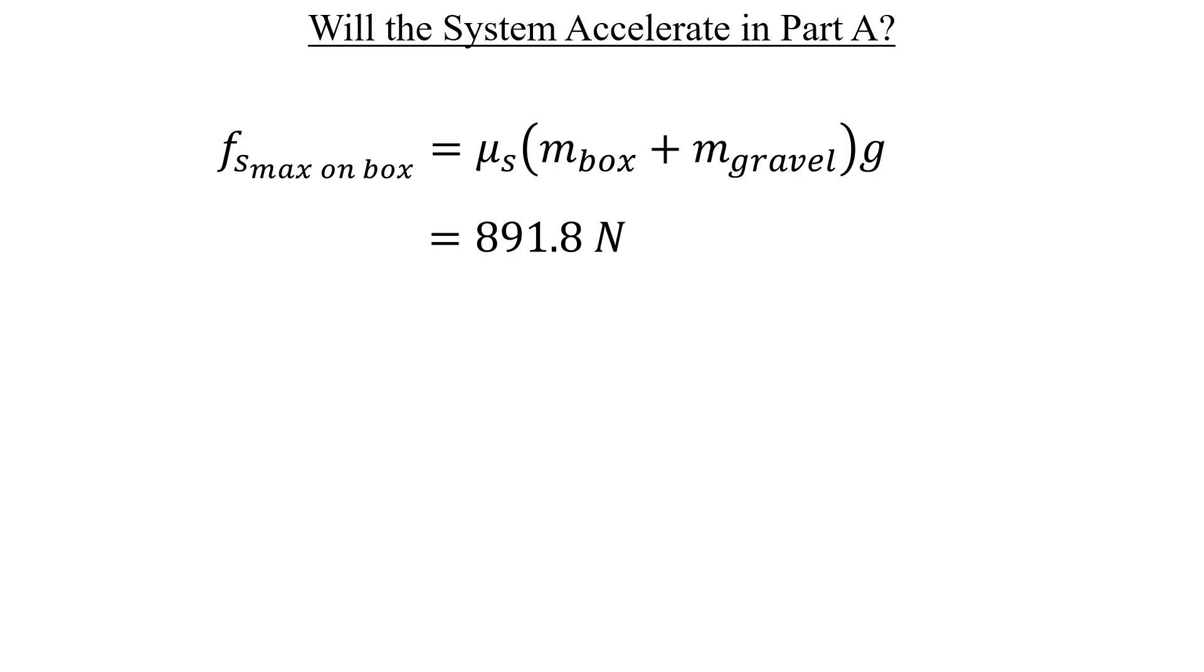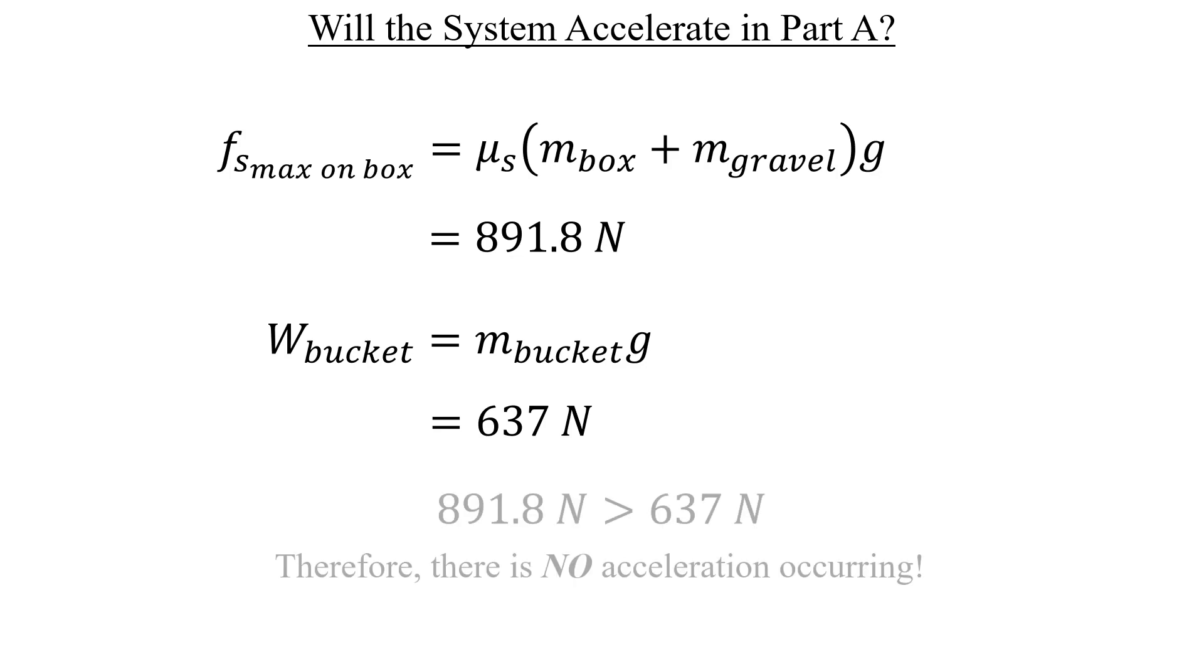Back on the free body diagram, we saw that the tension was responsible for opposing the friction of the box, which comes from the weight of the bucket. Let's go ahead and calculate that next. With that value known, we now have everything we need to answer the question. The tension of the cable coming from the weight of the bucket is smaller than the maximum static friction that can act on the box. So there's no way anything can be moving in Part A.